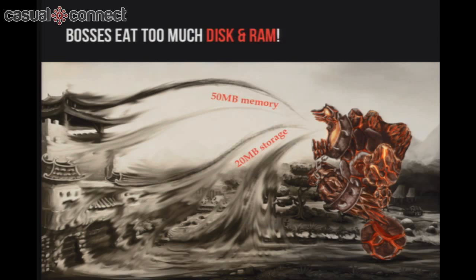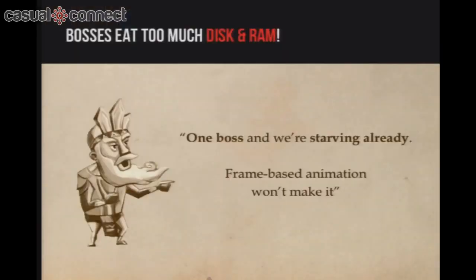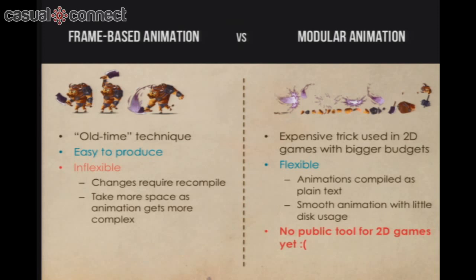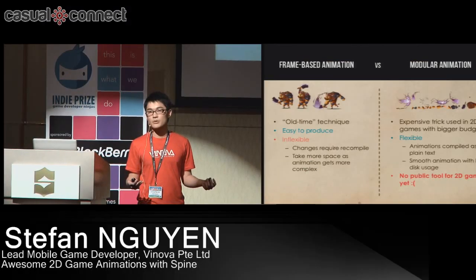Obviously, we needed to look for a different animation method. Back to basics: from the start, we had known there is an alternative solution called modular animation. It's a technique that allows you to combine movements of body parts of your character to create the overall animations. It's not a new technology — it has been used extensively in 2D games with bigger budgets. But for indie developers like us, for many years we hadn't had a chance to use it because there hadn't been any publicly available tools on the market.